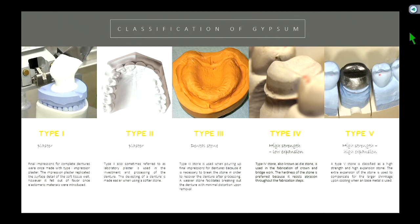Type 3 is used pretty commonly. When you make diagnostic impressions on your patients during their first exam — including alginate impressions of upper and lower — you're going to pour those up into type 3 stone, used for diagnostic purposes. You'll also pour all your complete denture impressions in type 3 micro stone. Key point: complete denture impressions should be poured in type 3 dental stone.